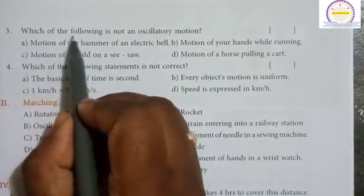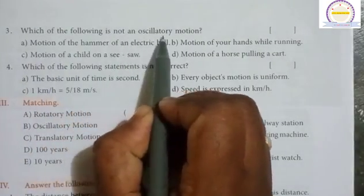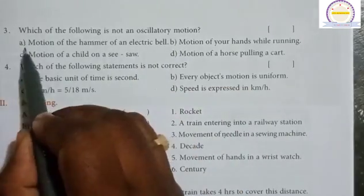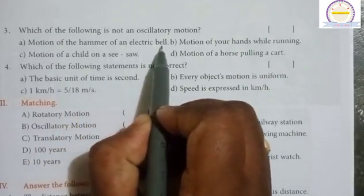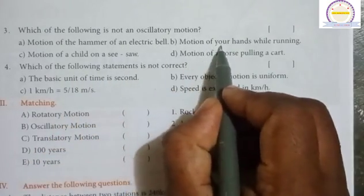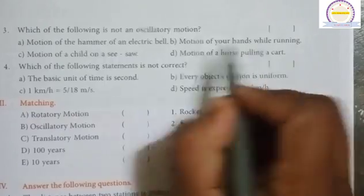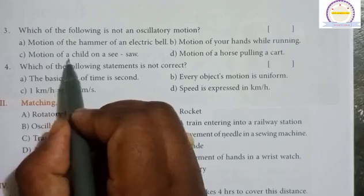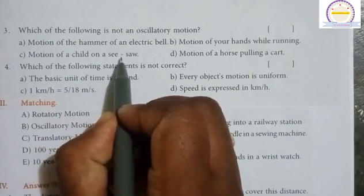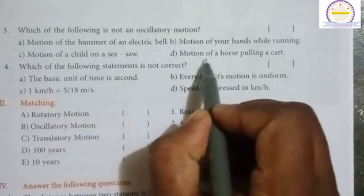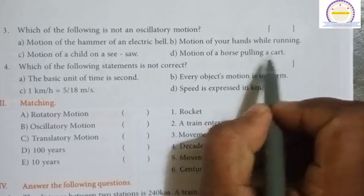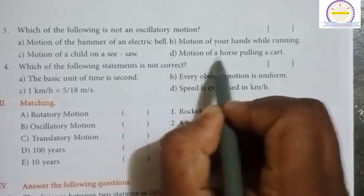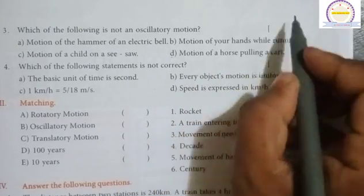Which of the following is not an oscillatory motion? a) Motion of the hammer of an electric bell, b) motion of your hands while running, c) motion of a child on a seesaw, d) motion of a horse pulling a cart. The answer is D: motion of a horse pulling a cart.